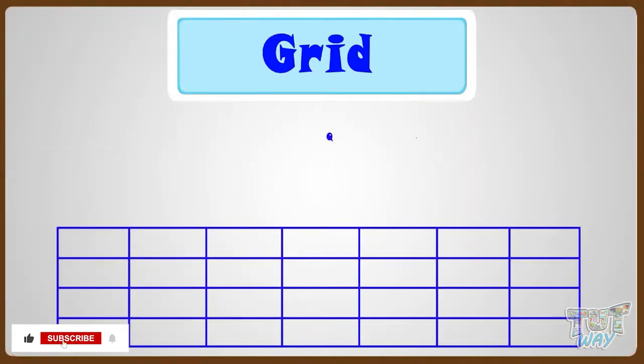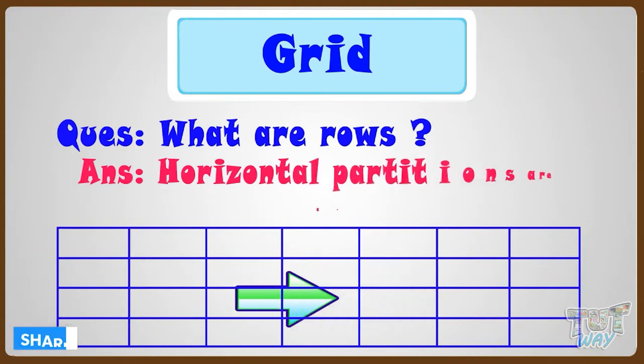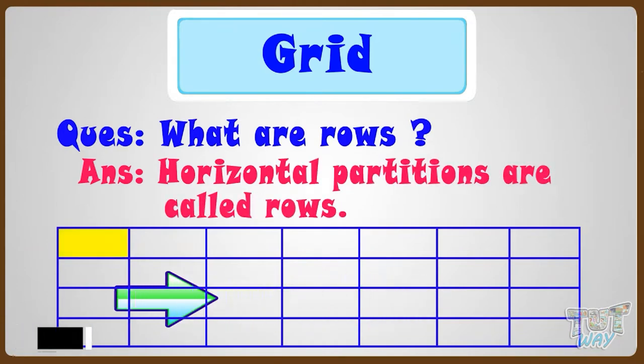Let's see what are rows. The horizontal partitions in the grid, like this, are called rows of the grid.